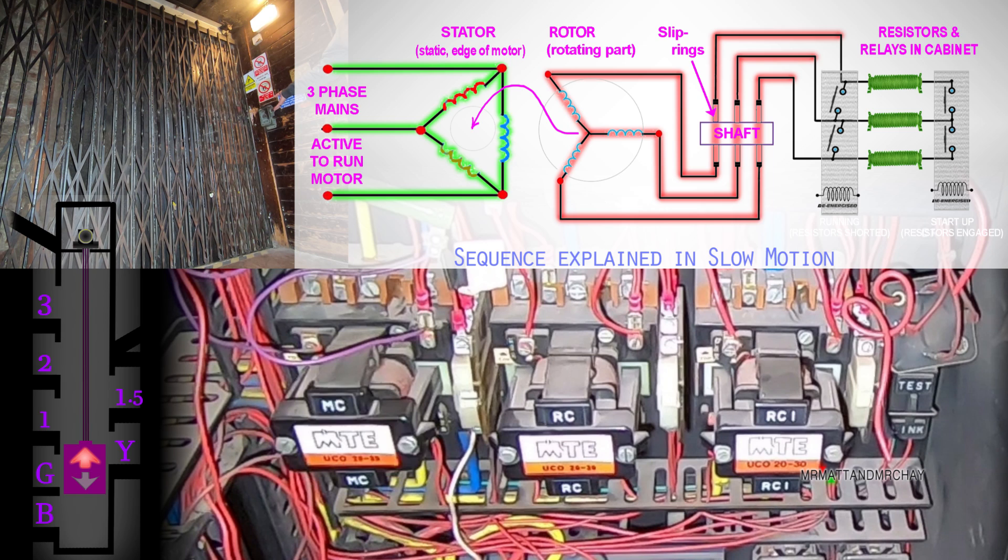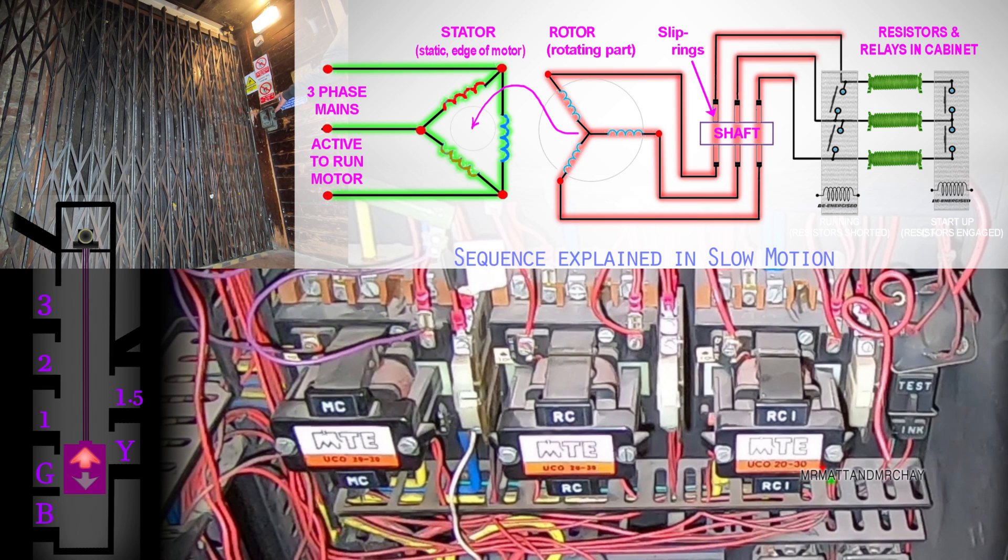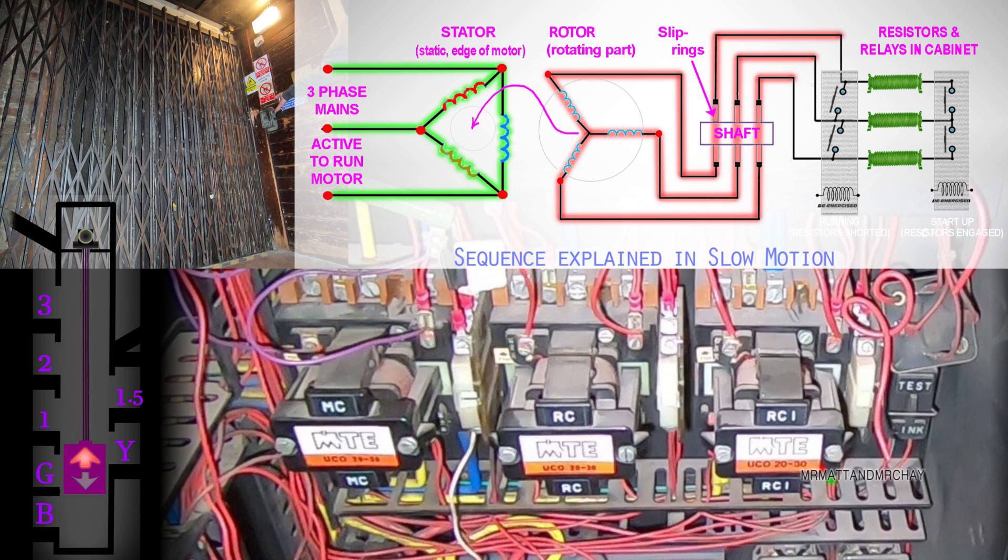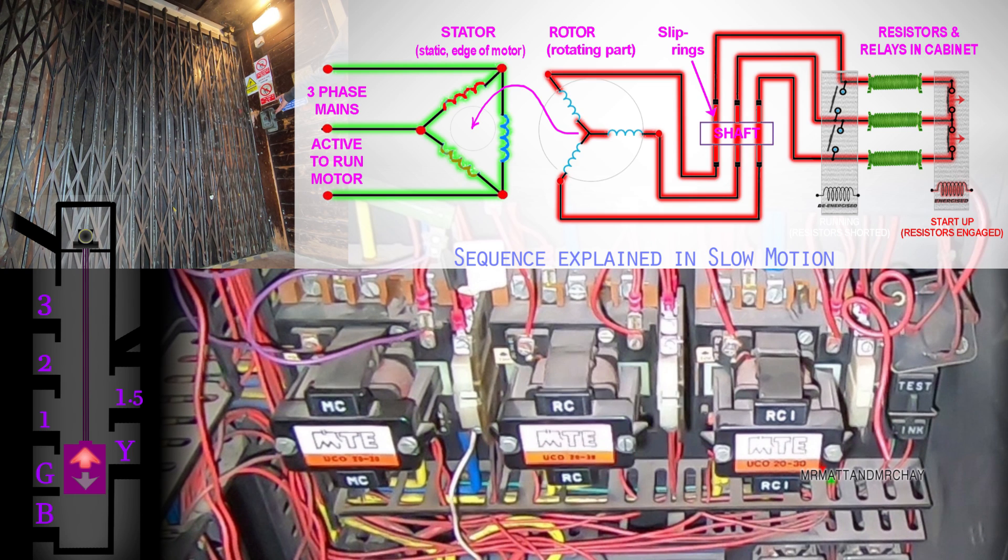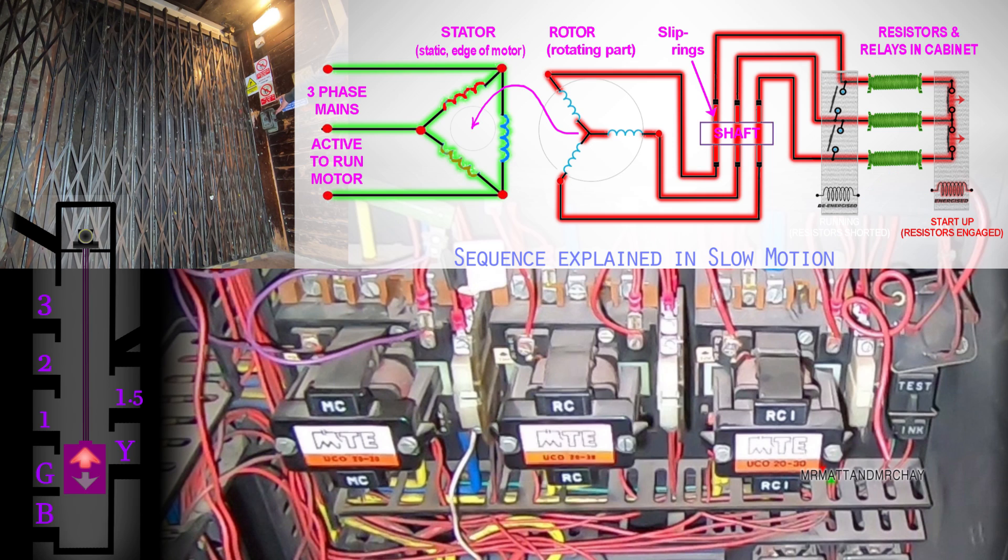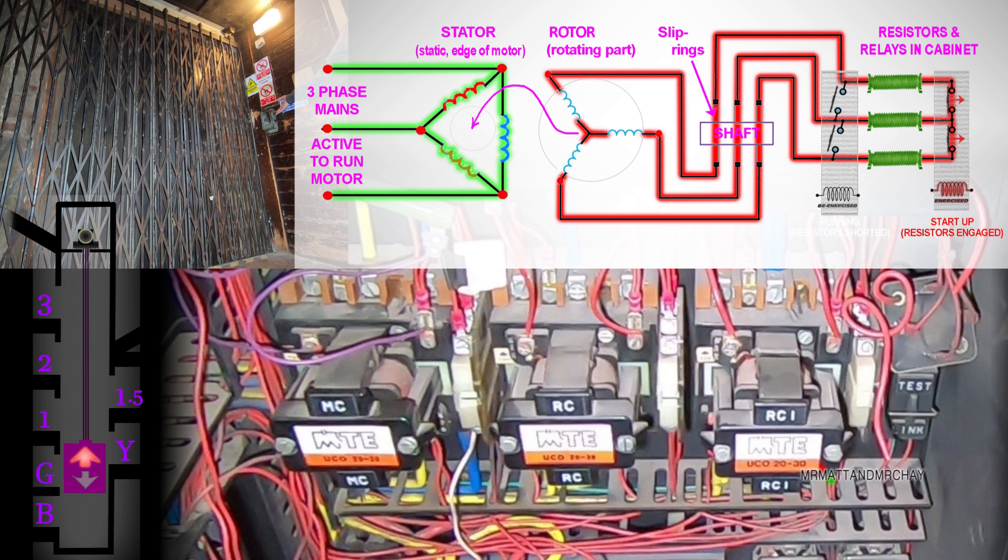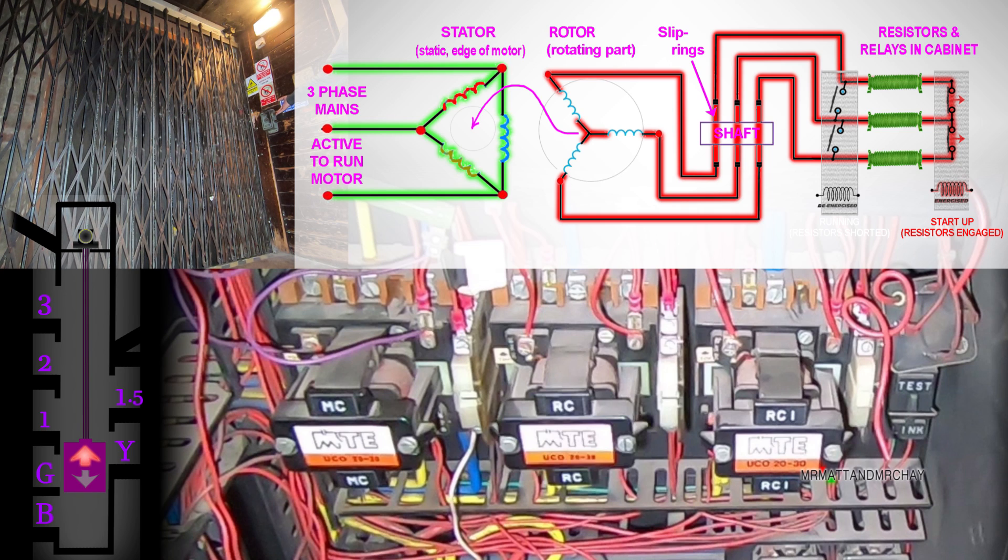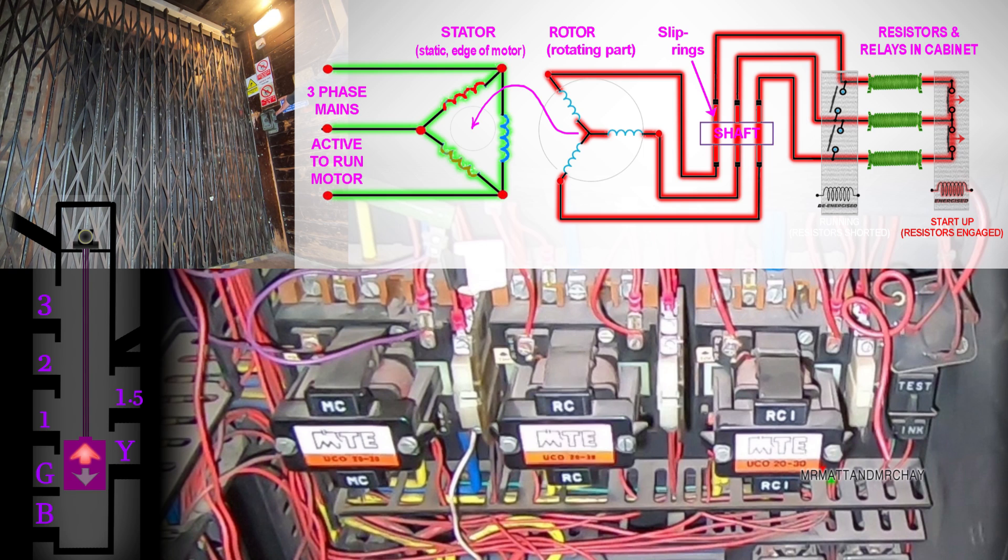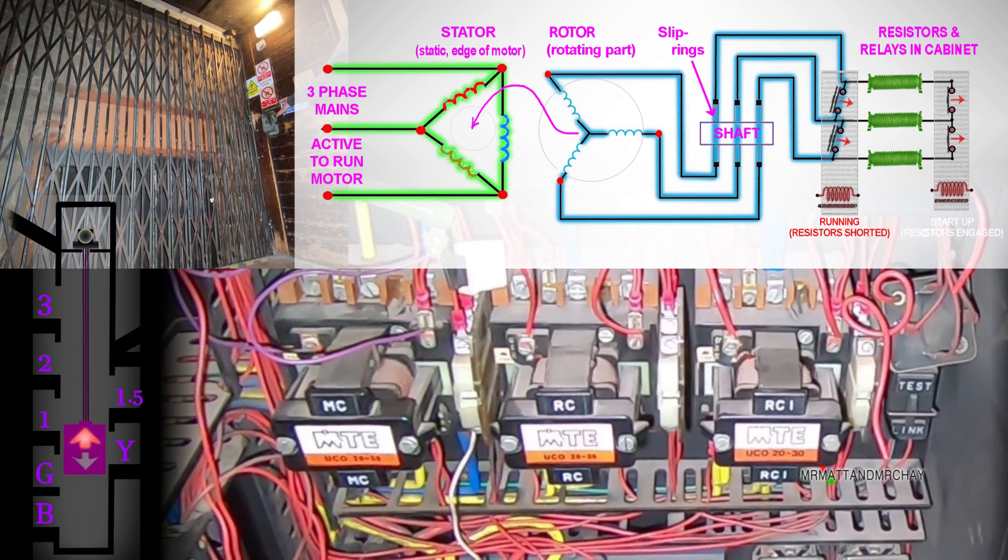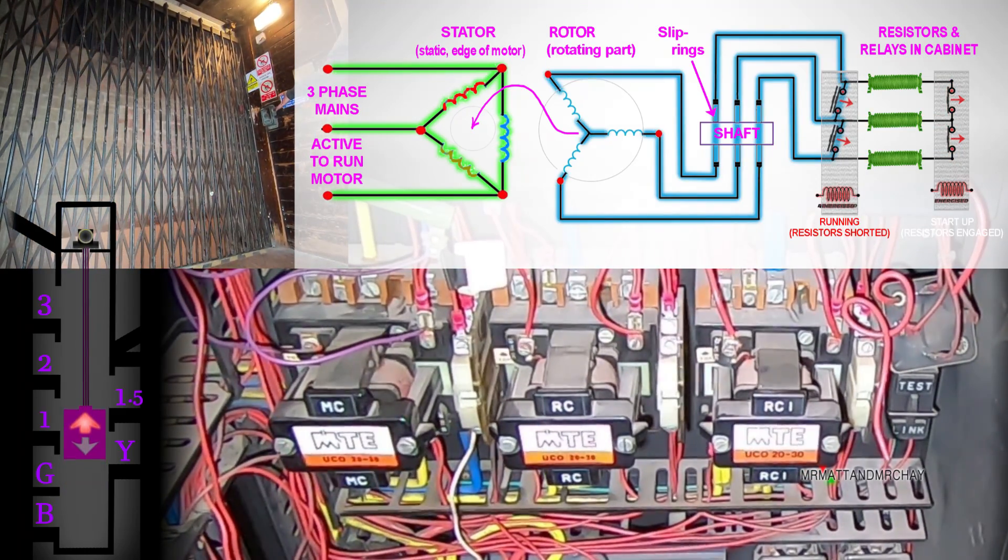Once the stator has power, the rotor is ready to turn. One and a half seconds later, the RC contactor connects all windings together, but forcing them through three resistors. This limits the amount of current being shared from winding to winding, creating the torque or magnetic grip advantage to get the motor running. One and a half seconds later, RC1 contactor creates a short circuit before the resistors, shorting them all out. This creates the conventional caged motor configuration for normal running.